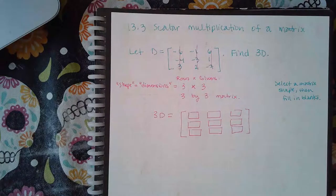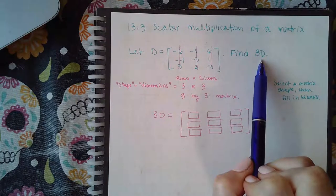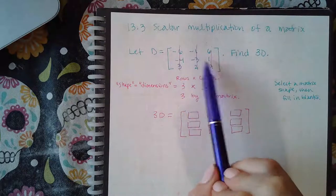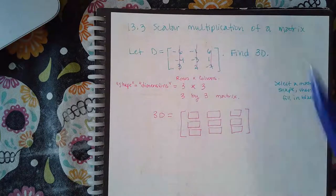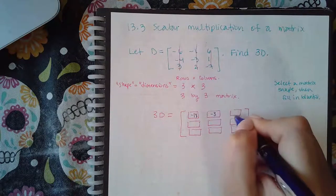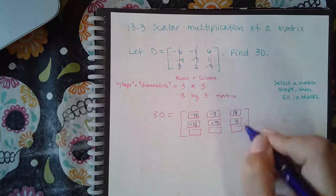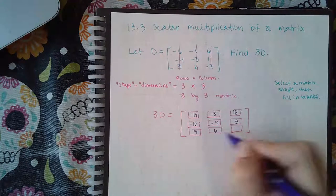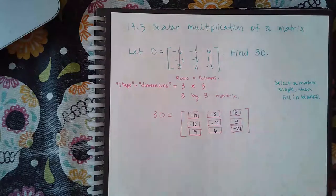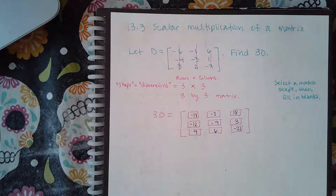So I'm going to take three times the matrix D, which means every single one of these numbers has to get multiplied by three. So the results are negative 18, negative 3, positive 18, negative 12, negative 9, 3, 9, 6, and negative 21. And that's the answer. You just select it and type everything in.